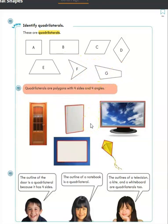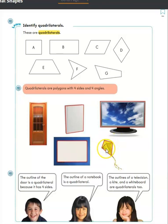Your computer monitor, your notebook, your door, your window — these are all quadrilaterals. This kite is a quadrilateral because it has four sides and four angles. So basically any flat shape polygon that has four sides and four angles is a quadrilateral.